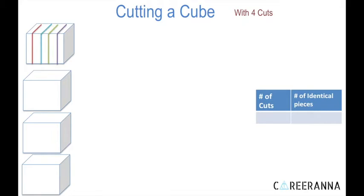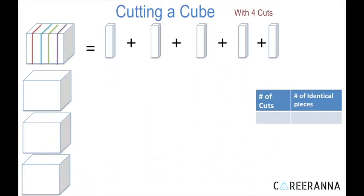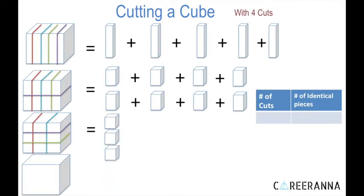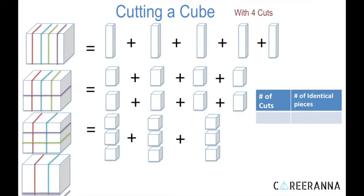For cutting a cube with four cuts: four parallel cuts give five identical pieces. Three parallel cuts and one perpendicular cut give four into two — eight identical pieces. Two parallel cuts and two perpendicular cuts give (2+1) into (2+1) — that is nine identical pieces. However, two parallel cuts, one perpendicular to those two, and one perpendicular to all three gives (2+1) into (1+1) into (1+1) — that is three into two into two — twelve identical pieces.